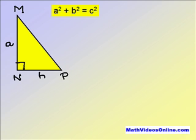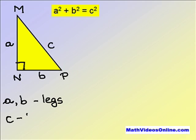If MN is A and NP is B, NP is C, A and B, the short sides in this triangle, are called legs. And C, the longest side that is opposite to the right angle is called the hypotenuse.